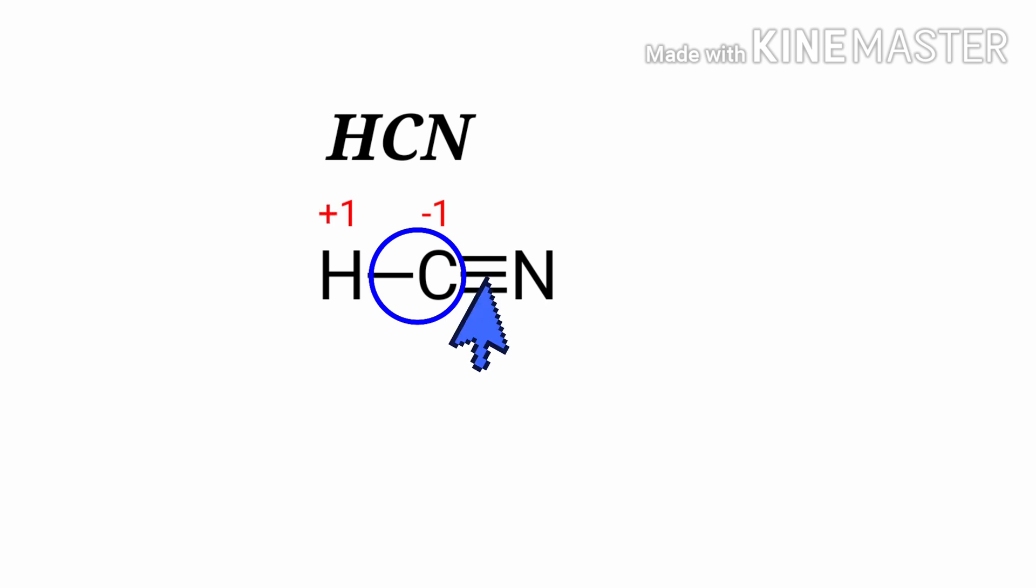Then in between the C-N bond, the more electronegative element is nitrogen than carbon. So nitrogen takes the three bonds towards itself. So the oxidation number of nitrogen is minus 3 and the oxidation number of carbon is plus 3, because there are three bonds.